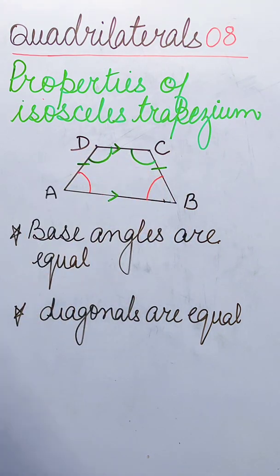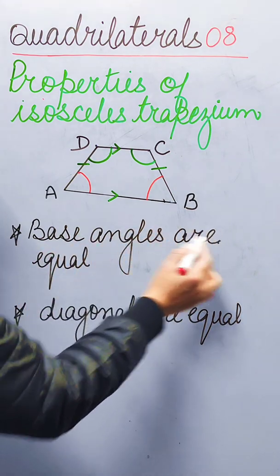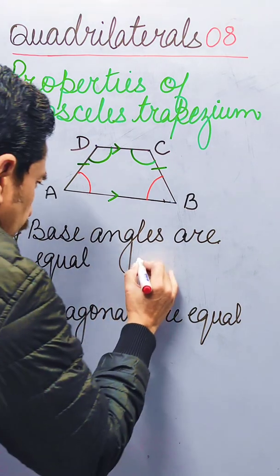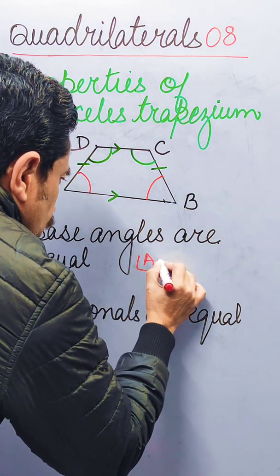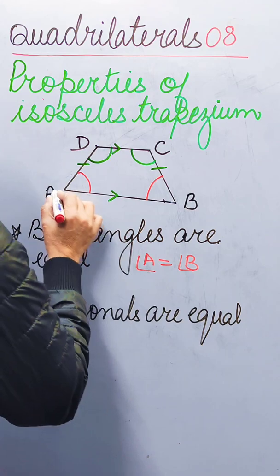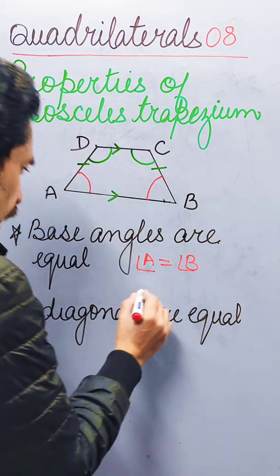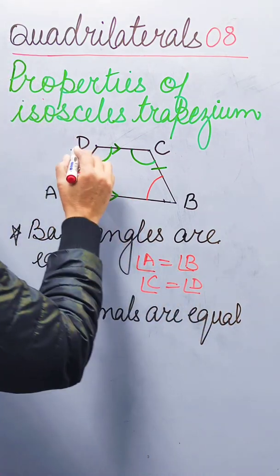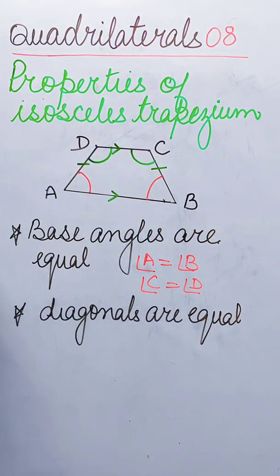The first property we will discuss: base angles are equal. Base angles are angles formed along the same base. That is, angle A is equal to angle B — two angles formed along base AB — and angle C is equal to angle D — two angles formed along base CD.